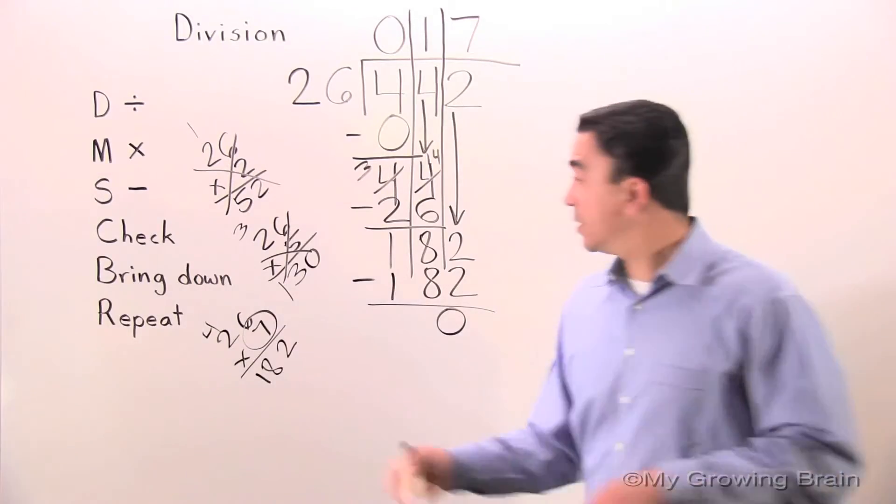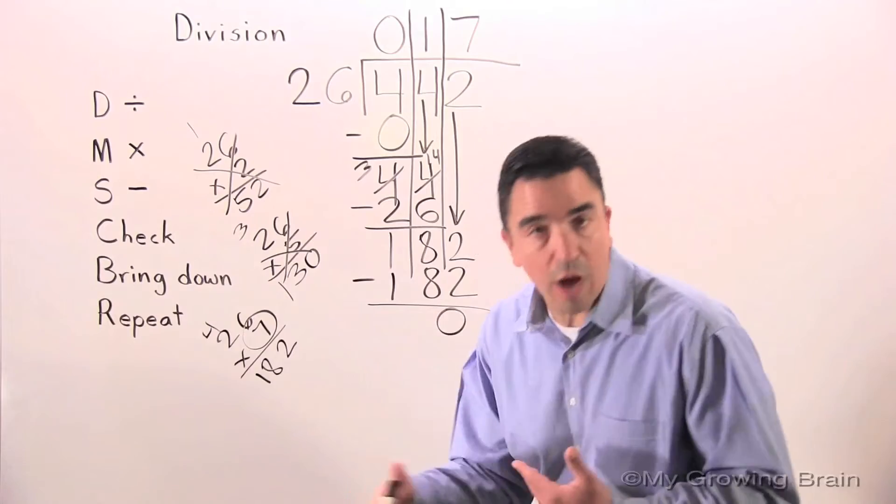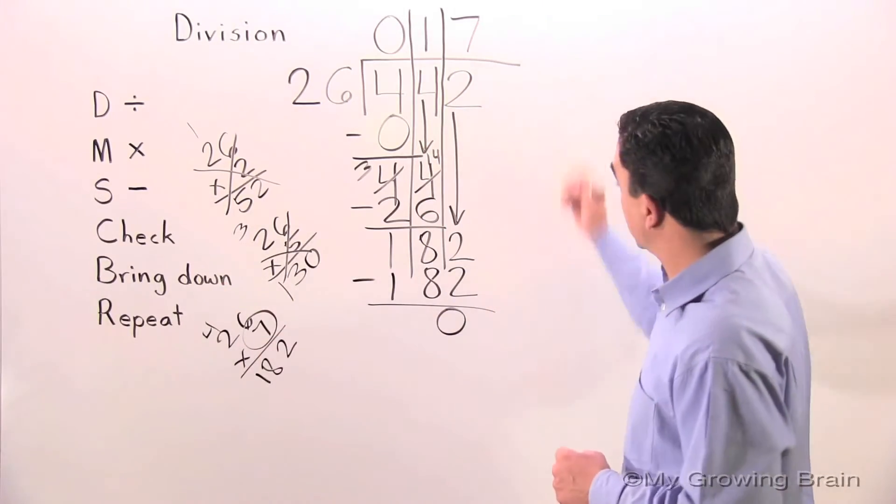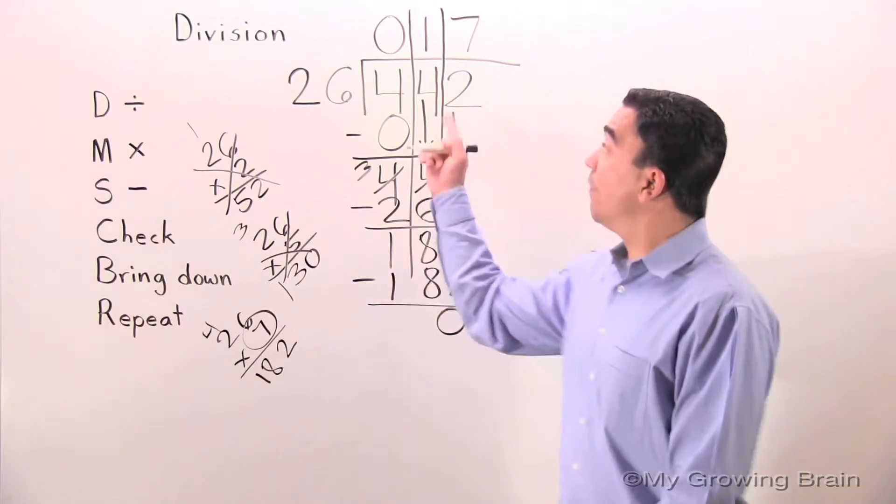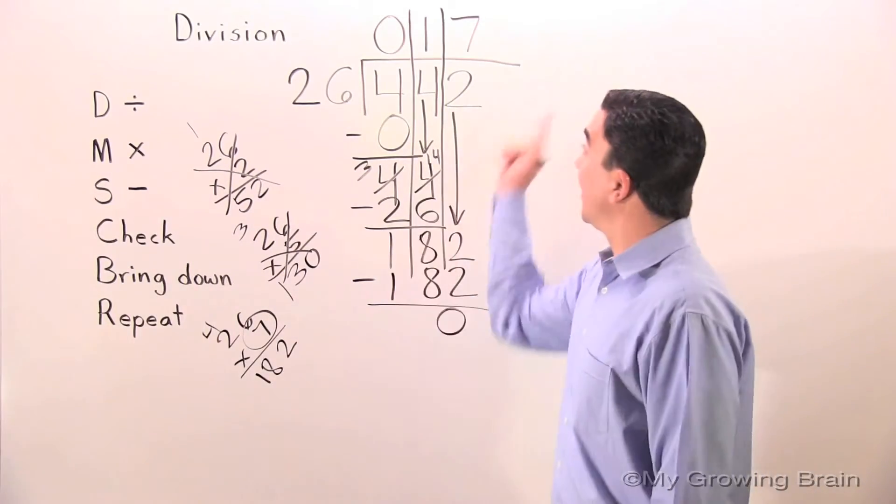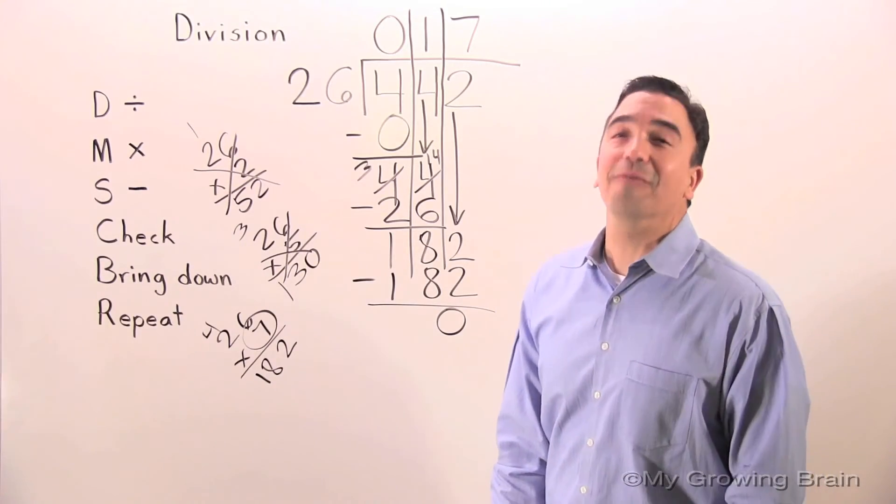Next step. Check. 0 is less than 26. Keep on going. Next step. Bring down. Nothing there. Therefore, 442 divided by 26 gives us a quotient of 17.